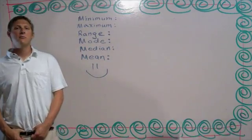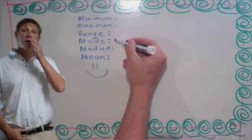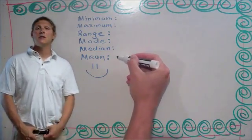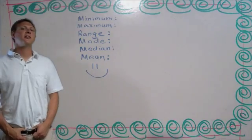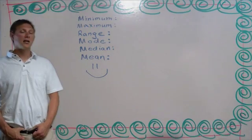Today we are going to look at understanding minimum, maximum, range, mode, median, and mean. These methods are typically used to help organize a series of data to make sense of a collection of numbers.